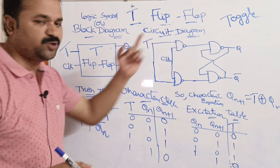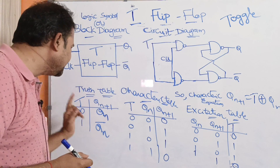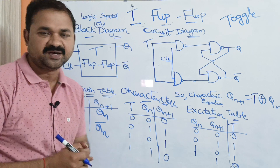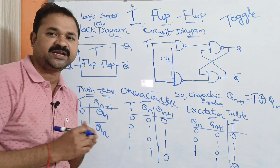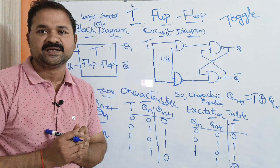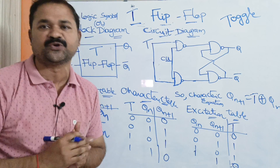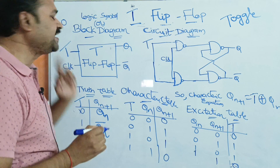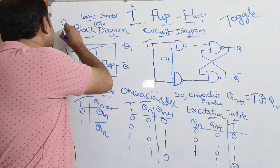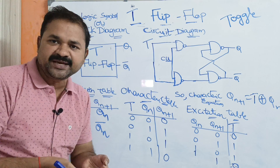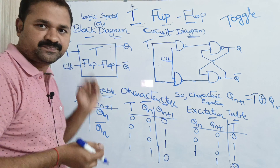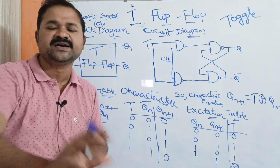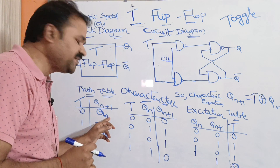Now let us see the truth table. We have only one input T, and the next state output is denoted by Q(n+1). The input may be either 0 or 1. If the input is 0, the output is the current state output only. So if the current state is 0, we get 0; if the current state is 1, we get 1. The next state output is the same as the current state output, which is why we write Q(n).